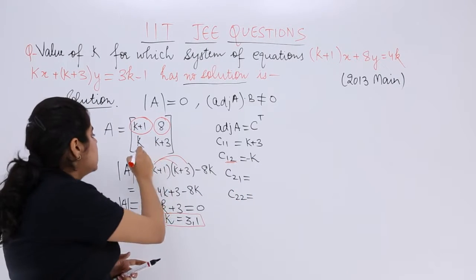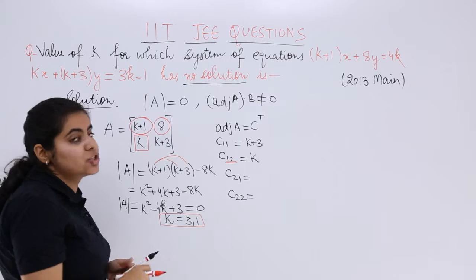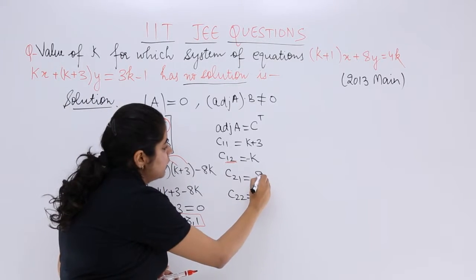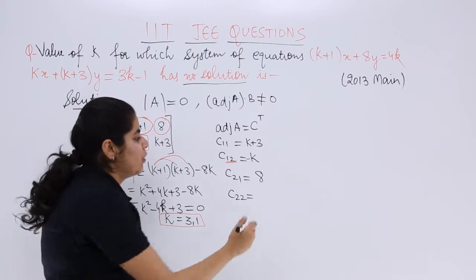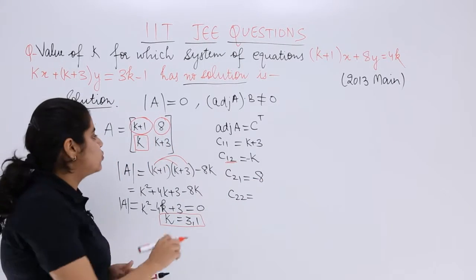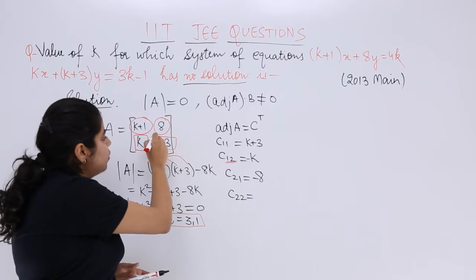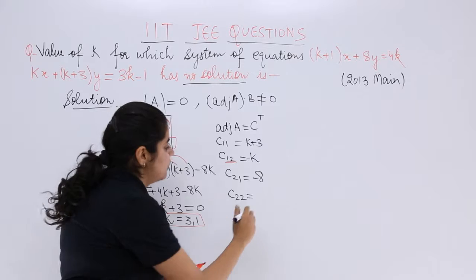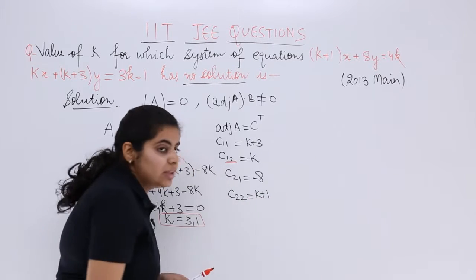Then c₂₁, second row first column. Ignore the row and column, you get 8. And 2+1=3, again odd, so it's minus 8. Next is c₂₂. Calculate the cofactor by ignoring the row and column. You get k+1.